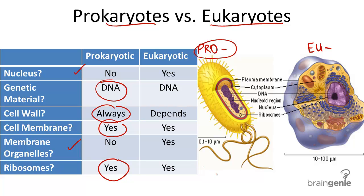Examples of prokaryotic cells include bacteria, like thermophiles that live in volcanoes, or E. coli that lives in your intestines.